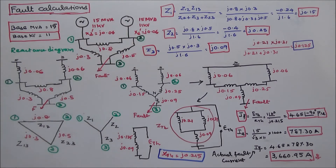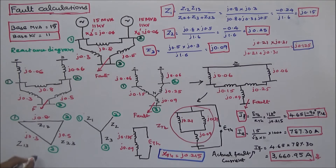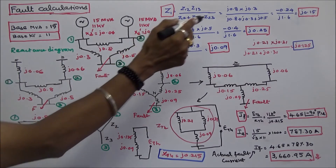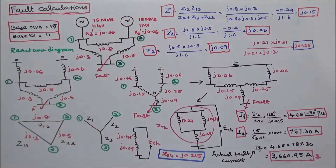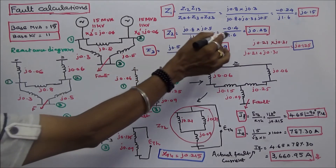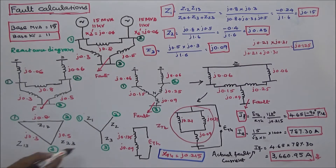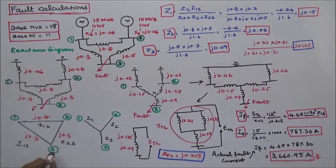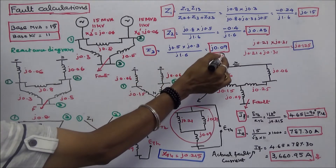Z1 is equal to J0.8 multiplied by J0.3, divided by J0.8 plus J0.3 plus J0.5, which equals J0.15. Similarly, Z2 is equal to J0.8 multiplied by J0.5, divided by J0.8 plus J0.3 plus J0.5, which equals J0.25. Z3 is equal to J0.3 multiplied by J0.5, divided by J0.8 plus J0.3 plus J0.5, which equals J0.09.